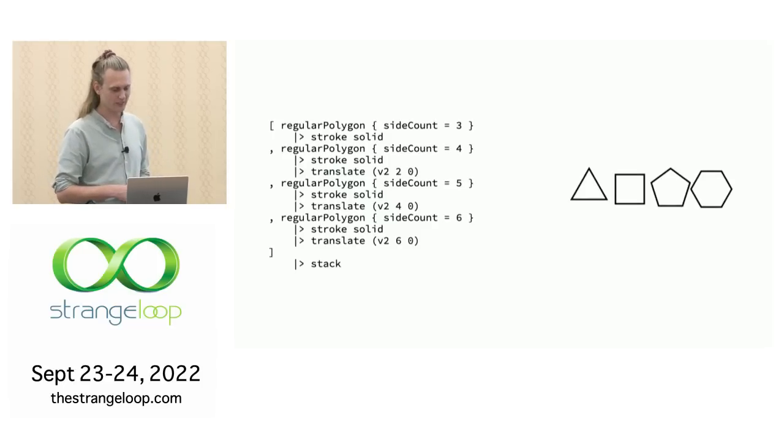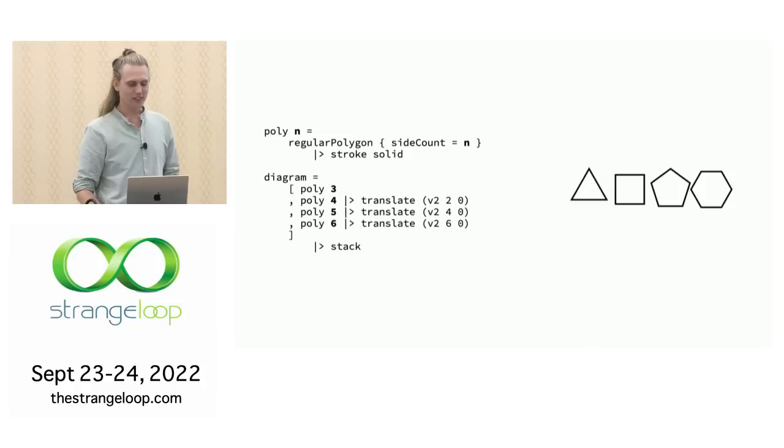And it's starting to get a little messy, a little repetitive. You might start to feel your programming brain turn on. In fact, these are doing the same thing, but there's a parameter here. So let's write a function. We'll pull out the common stuff, and now we can just say poly three, four, five, six. And it's much clearer what's going on.